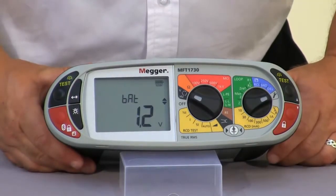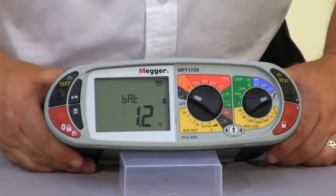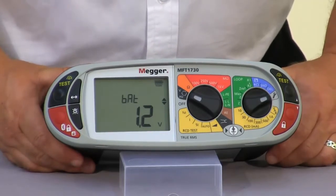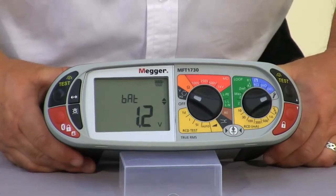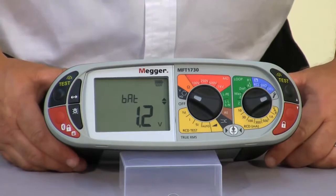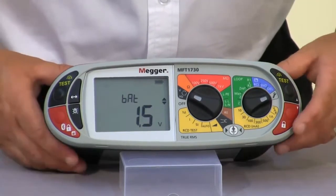The BAT is the battery value. On the MFT1730, because we have rechargeable cells, they're actually rated at 1.2 volts. However, they are standard AA size. So if you wanted to swap these out with a standard AA cell, because you'd forgotten to charge the unit the night before, for example, you can actually go in and select a 1.5 volt cell, which is a standard AA.